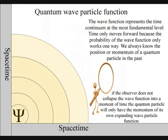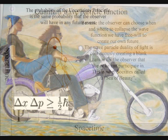Any object can collapse the wave-function, but it is because the observer can choose when and where to collapse the wave-function that we have free will to create our own future.